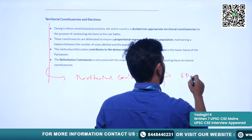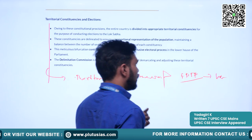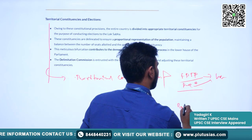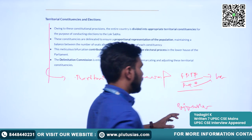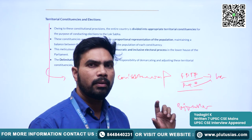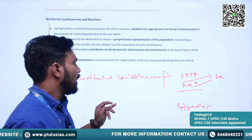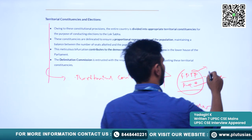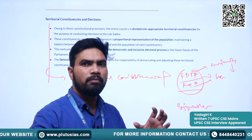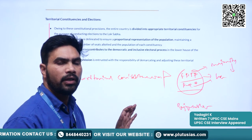In India we follow the First Past the Post (FPTP) system for elections to Lok Sabha. We are not following proportional representation for Lok Sabha. For Rajya Sabha elections, we follow the system of proportional representation with a single transferable vote. In FPTP, the person getting the majority number of votes is declared as the winner. In proportional representation, it is a more complex system — the person should get 50% of votes plus one.